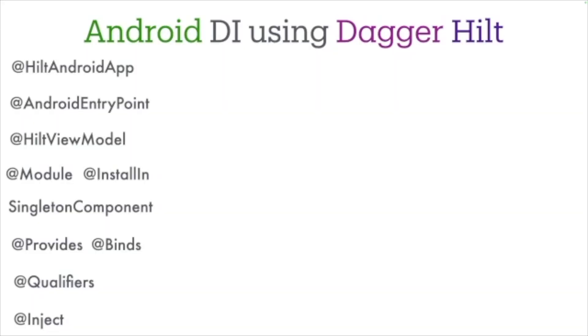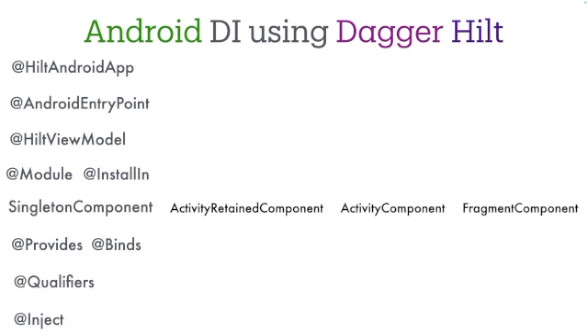Now let me give you a quick overview of the remaining things to look into and how they are very similar to what you already know. We have used singleton component, but Hilt also has activity retained component, activity component, fragment component, and many more. They all follow the same pattern where you use @Module plus @InstallIn and then specify a component class in the brackets. You already know how to do that with singleton — just apply it to different life cycles.